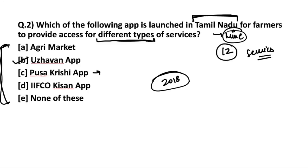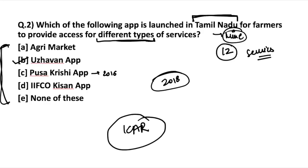Some other important farmer-related apps: the Pusa Krishi app was launched in 2016 with the initiative to take technology to farm fields and make farmers aware of it. It provided information related to new crop varieties developed by ICAR — the Indian Council of Agriculture Research. The Agri-Market application was used to get market prices of crops within a 50-kilometer range of the device location. Do remember these apps and their basic agendas.